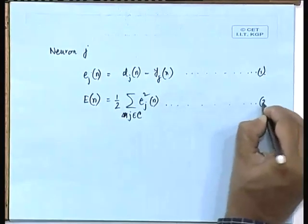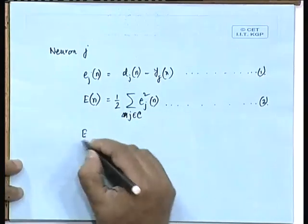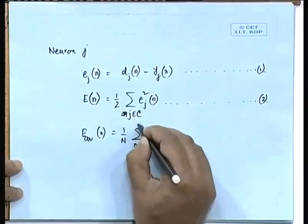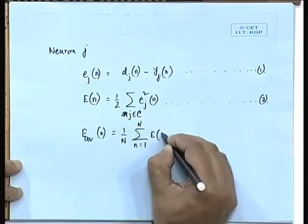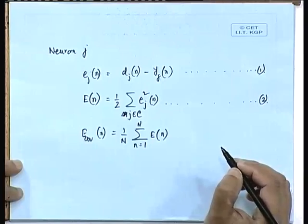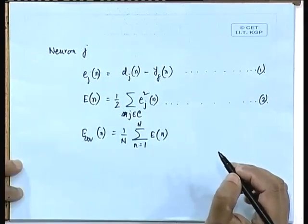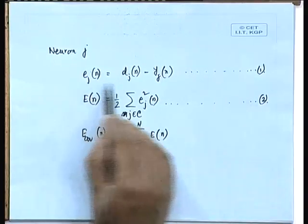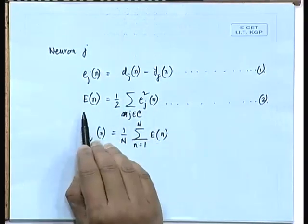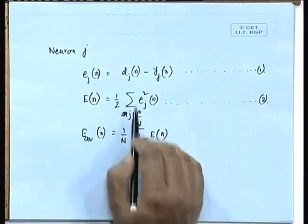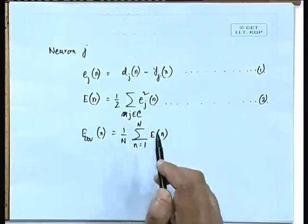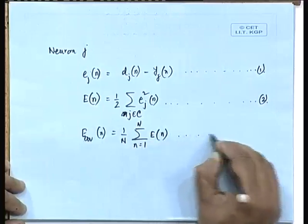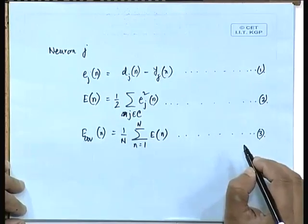We defined the instantaneous value of the error energy E(n) at iteration n to be equal to half of the summation of E_j squared, where j belongs to the set C, which includes all neurons in the output layer. This is equation number 2. We also defined the average square error energy as (1/N) times summation from n=1 to N of E(n), where N is the total number of pattern presentations. This is equation number 3.